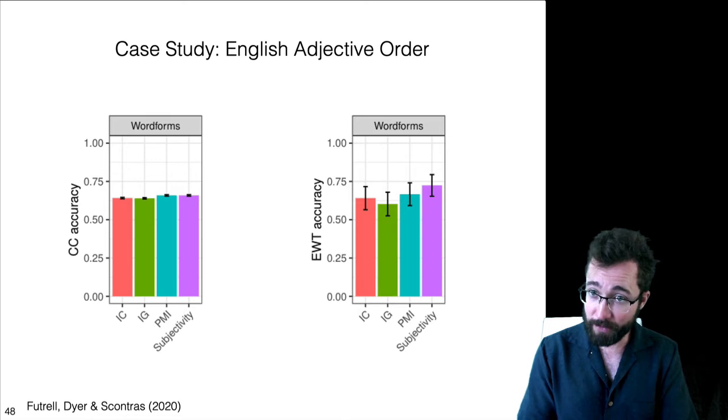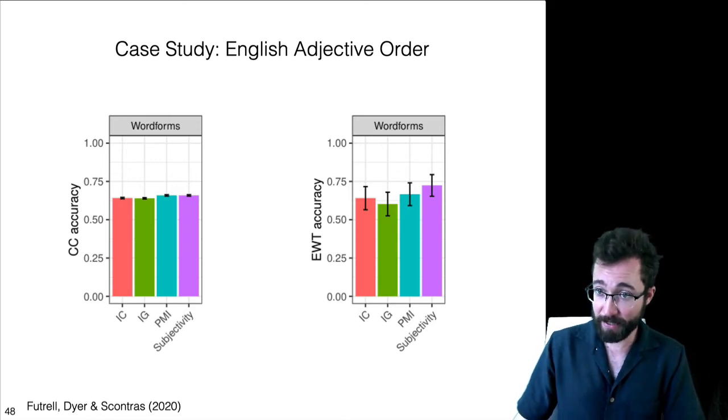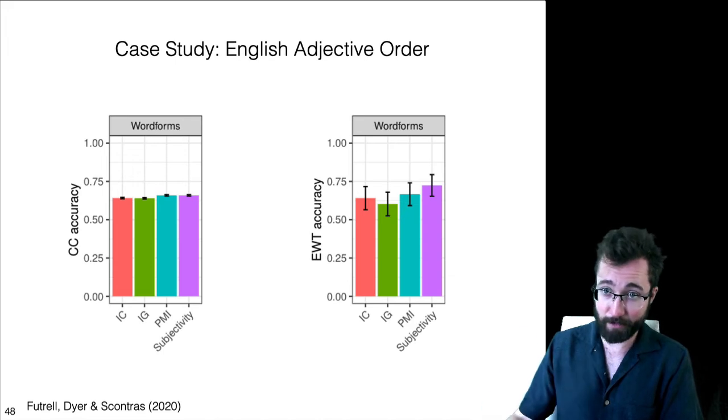In the English web tree bank, much smaller but hand parsed, we get the same result. PMI and subjectivity are the best two predictors. The error bars are bigger now though.